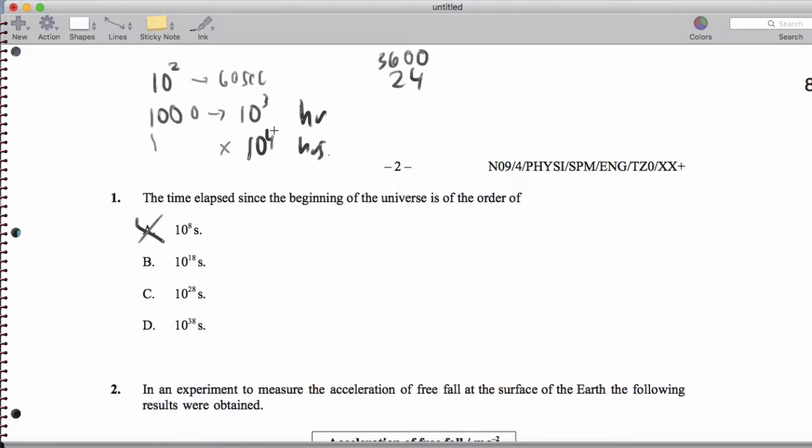So that's 10 to the fourth hours in a day. And then there's 365 days in a year. So that's like 10 to the seventh. So that's about 365 days. That's one year.